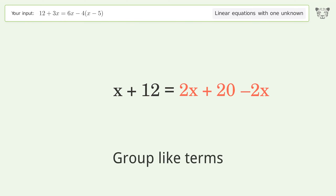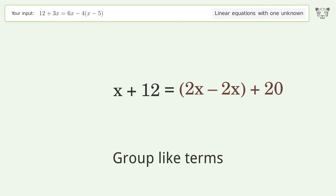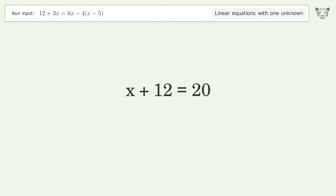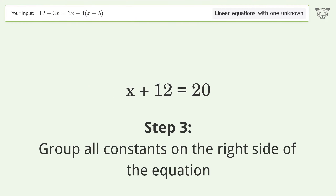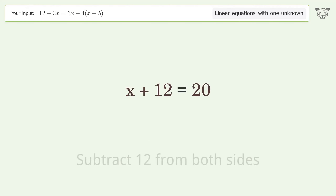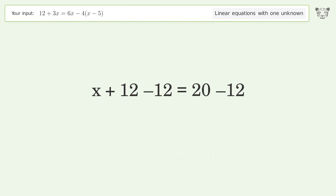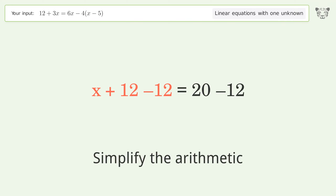Group like terms and simplify the arithmetic. Group all constants on the right side of the equation — subtract 12 from both sides. Simplify the arithmetic.